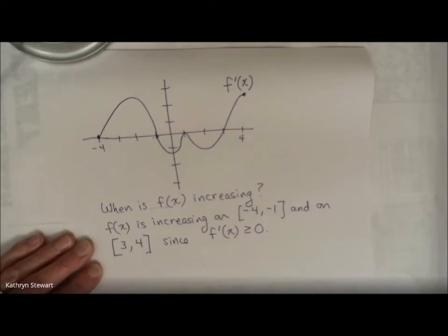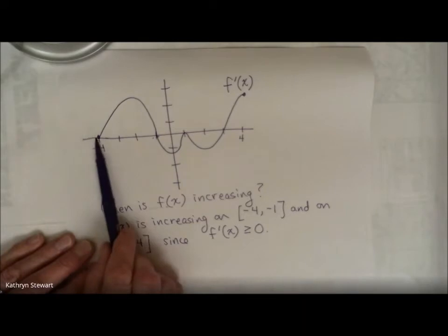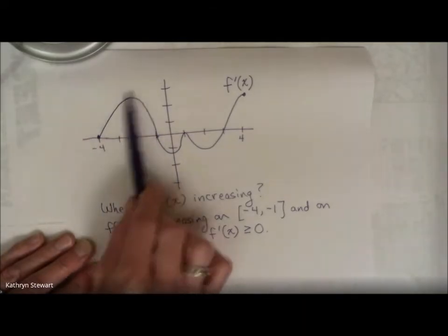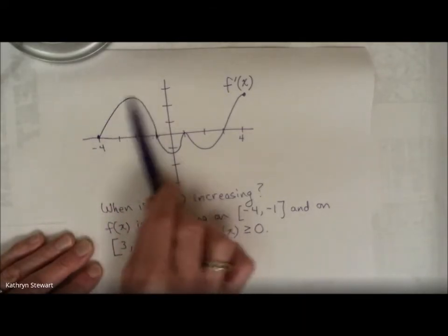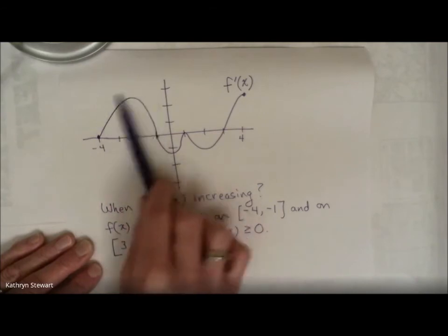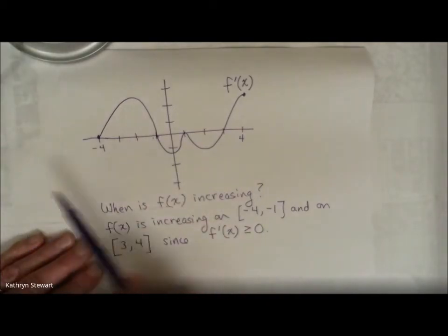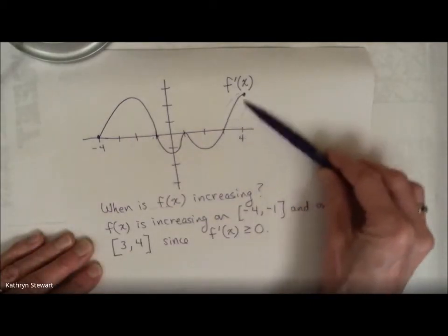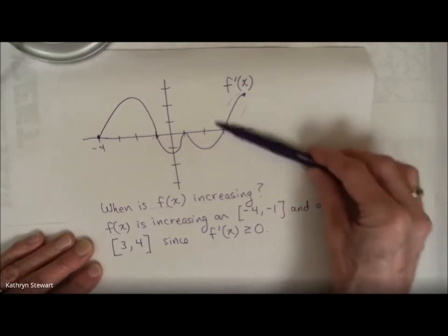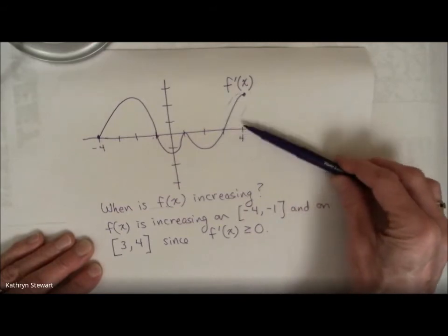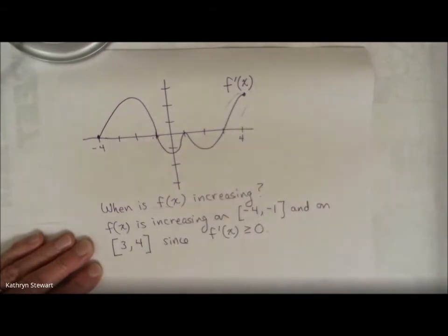Okay, so the function is increasing from negative 4 to negative 1 because my derivative is in positive land, right? If my derivative is in positive land, that means the derivative of the original function is positive and therefore the slope of the original function is positive. It's also, my derivative is also in positive land over here from 3 to 4, which means my original function is increasing.